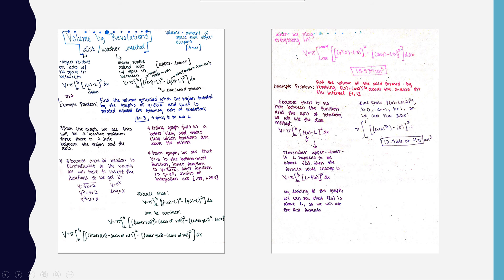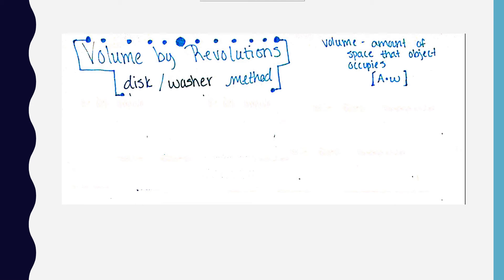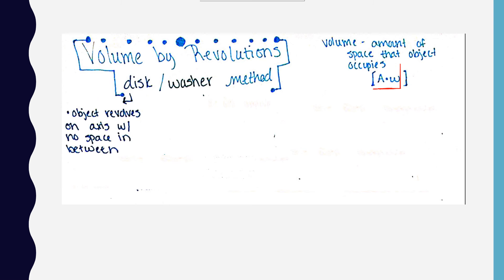The next topic I'm going to be covering is volume by revolutions — the disk method and the washer method. The definition of volume is just the amount of space that an object occupies, and to solve for volume you take area times width. This ties in with the previous concept because you wouldn't be able to solve for volume without being able to solve the area. You use the disk method when an object revolves around an axis with no space between that object and the axis. You use the washer method when there is a space between that object and the axis of rotation.